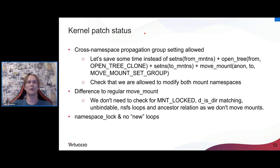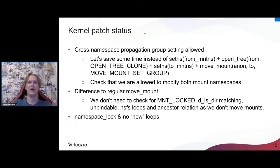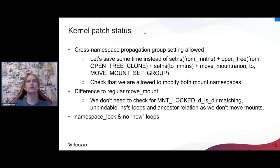Due to namespace lock, we don't race with any propagation — there's no situation where in the middle of propagation some mount will change sharing group. Also, it needs to be stated clearly that we don't create new mounts and we don't actually change the sharing group tree. So there should be no loops created by this new feature — we should be safe.